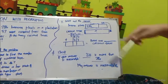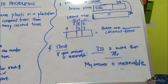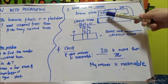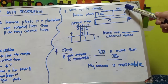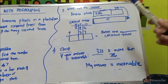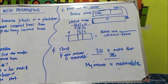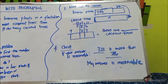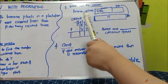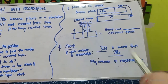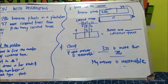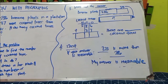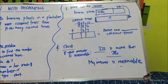Three, work out the answer. The banana plants are 286 and 37 for the coconut trees. I added more to the coconut trees. So my equation is 286 plus 37.